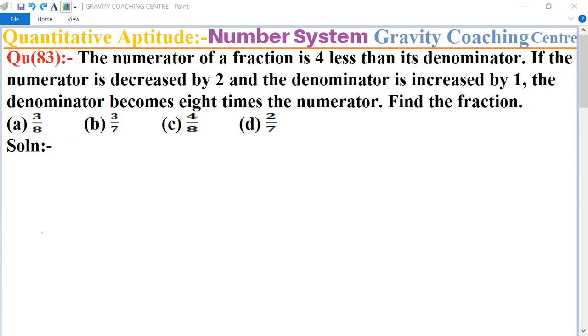In this question, first of all, we let the denominator be x. Then the numerator equals x minus 4, since the numerator is 4 less than the denominator.